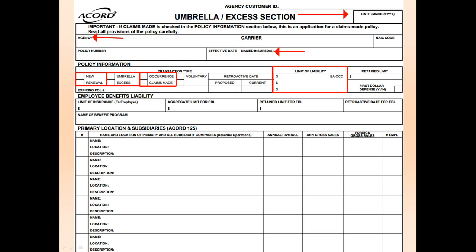Moving down to the primary location and subsidiaries box, you'll need to enter the primary location and the description of operations. Be sure to include all annual payroll, annual gross sales, and the number of employees. This is vital information as many of your umbrella excess markets will categorize your insured based on these figures.